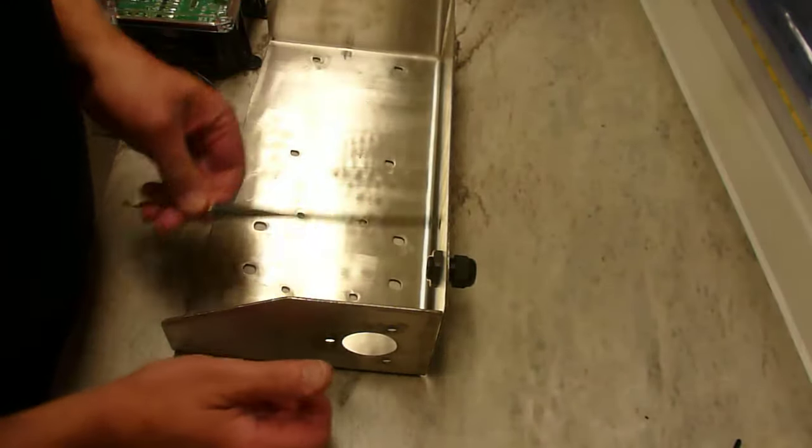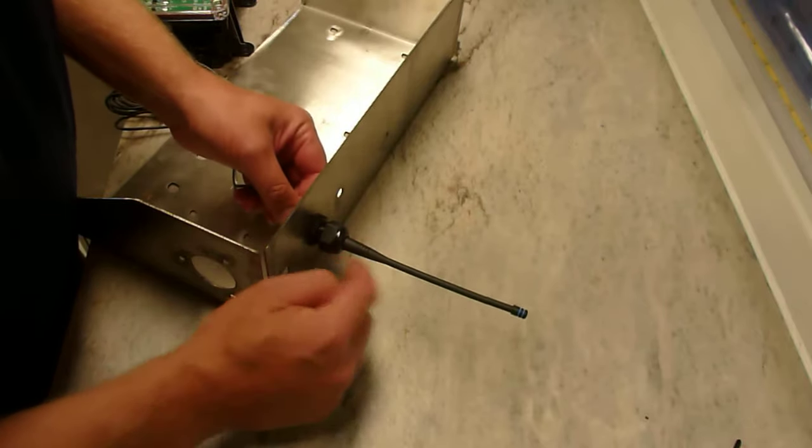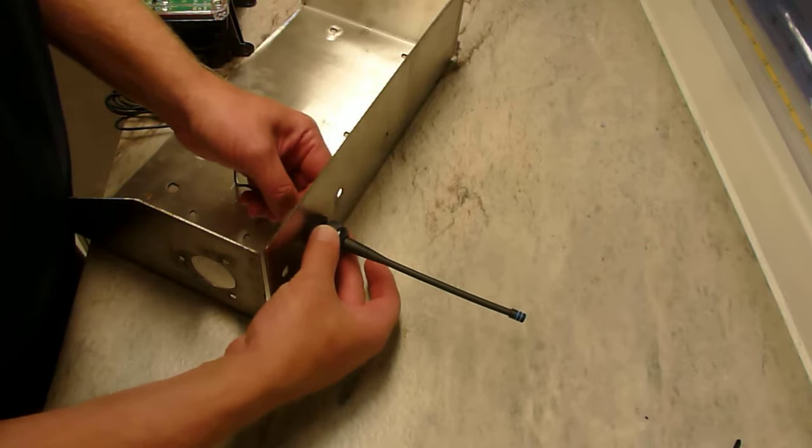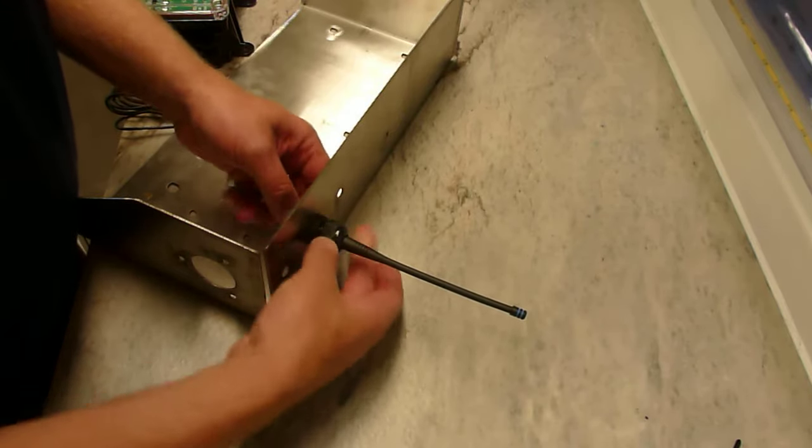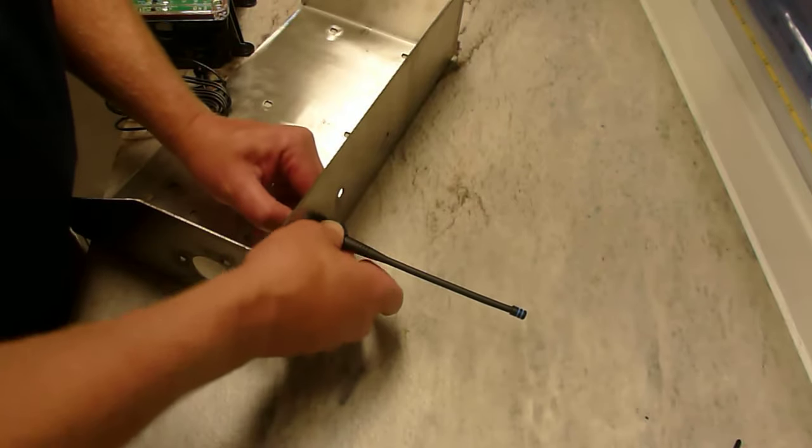Then what you need to do is insert the aerial itself through the cable gland until there is 145mm poking out of there. It's about there. And then tighten up the nut. This will fully seal it and make it nice and waterproof, and you won't have any problems with it in the future.